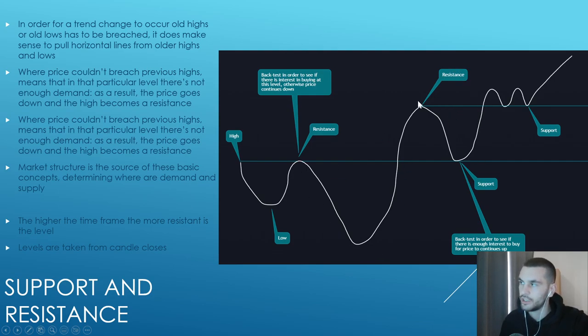This is when you change the trend as well. In order for a trend change to occur, old highs or old lows have to be breached. It makes sense to pull horizontal lines from all the highs and lows, and I would say the levels are taken from the candle close.